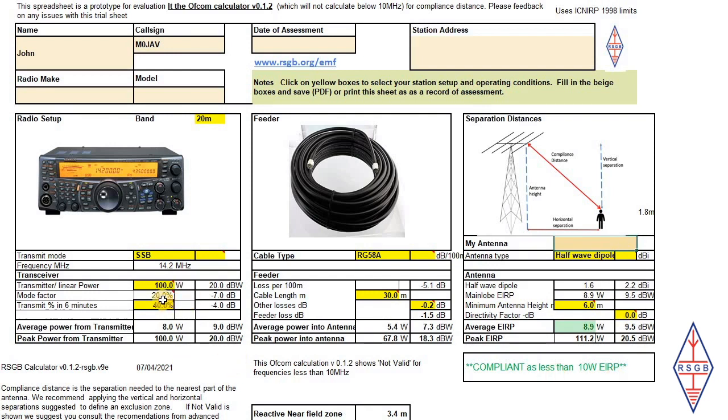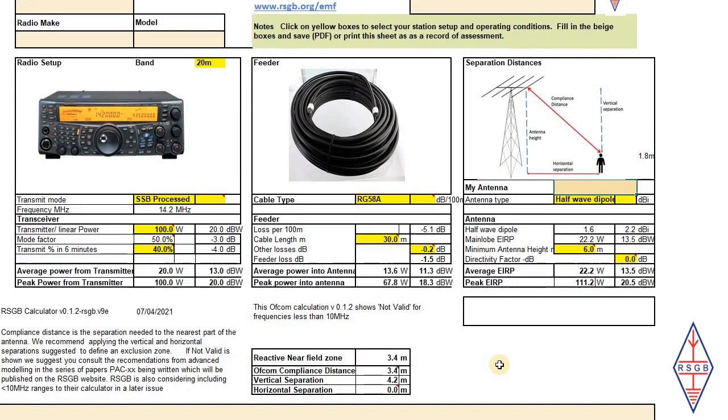Now, that won't always be the case. It's simple to show that, say, I change my mode from SSB, I press the processing button, so I'm now in SSB processed. What you see now is that my 100 watts becomes 20 watts. After the feeder, it becomes 13.6 watts. But now, the EIRP is 22.2 watts, this is above the 10-watt limit, so what needs to be done now is to let the calculator calculate the compliant distance. In this case, the Ofcom formulae tell me that it's 3.4 meters.